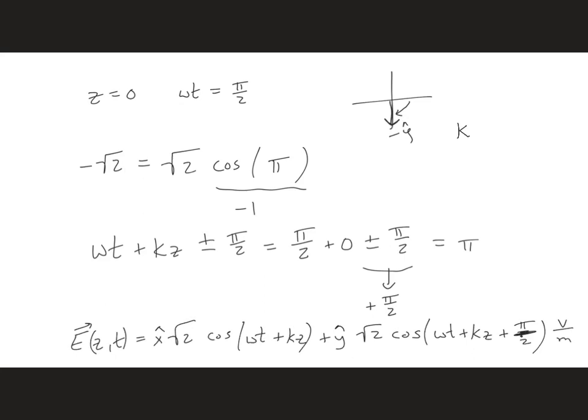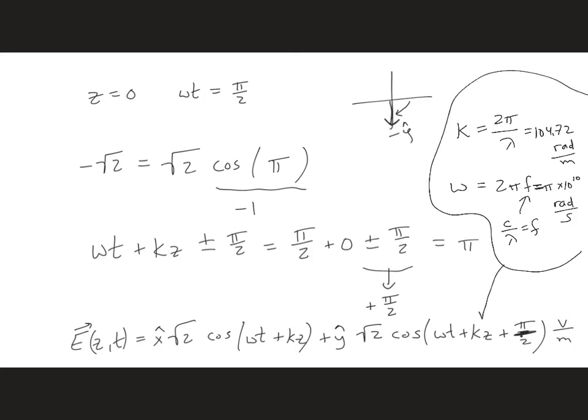Now for k, we can fill in a value for k. For free space, we have 2 pi over lambda. Lambda was given, so we're going to get 104.72 radians per meter. And we also need omega, which is 2 pi f, and since we're given lambda and we're in free space, we can get f from c over lambda, since c is equal to lambda f. So we put all that together and we get pi times 10 to the tenth radians per second. So here are the coefficients that go into both of these cosine terms.